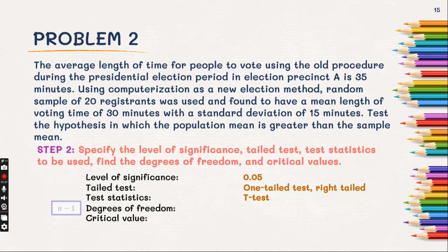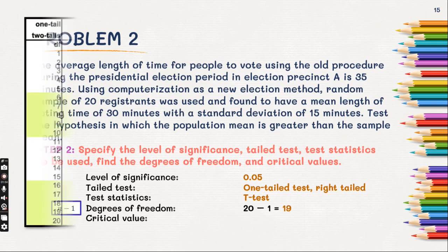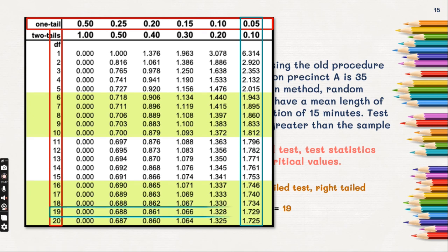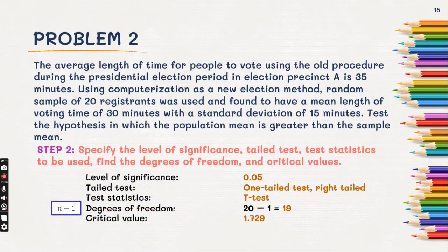The degree of freedom is n minus 1, so that would be 20 minus 1, which equals 19. Getting our T-table, our degree of freedom is 19, our tailed test is one-tailed, and our level of significance is 0.05. So here is our critical value: 1.729. Since this is right-tailed, the critical value is positive 1.729.